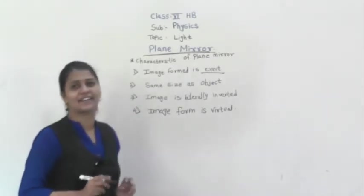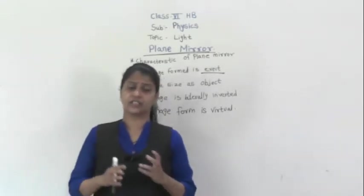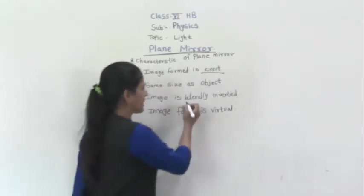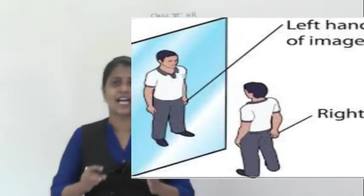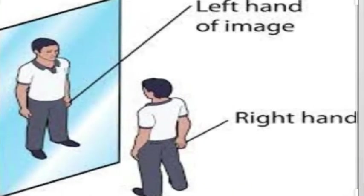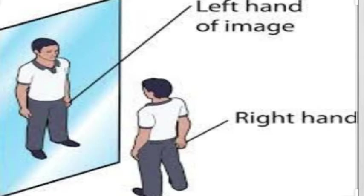The next characteristic is that the image is laterally inverted. When you stand in front of the mirror and raise your right hand, you observe that the left hand appears raised in the mirror. So laterally inverted means the right side appears to be the left side and the left side appears to be the right side.